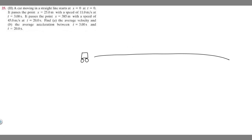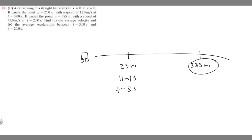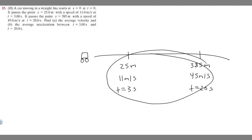It's traveling along and at x equals 25 — I'm going to draw a line here — this is going to be 25 meters. The distance between this is 25 meters and it's traveling at a speed of 11 meters per second at t equals 3 seconds. Then further along it passes the point 385 meters — this isn't going to be to scale, but that's fine — 385 meters with a speed of 45 meters per second at t equals 20 seconds.